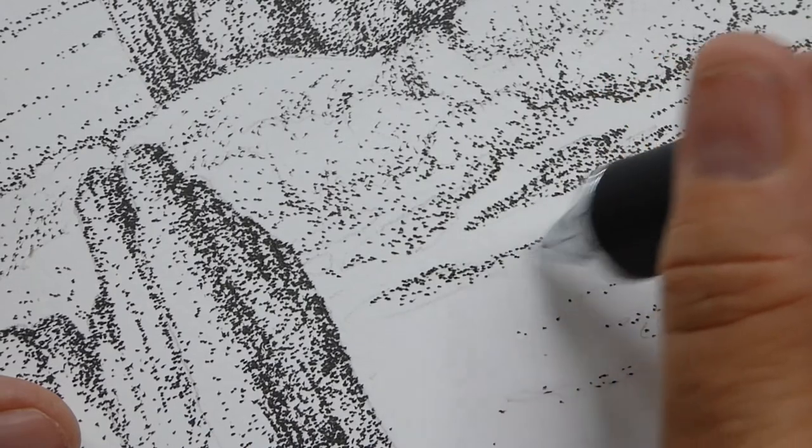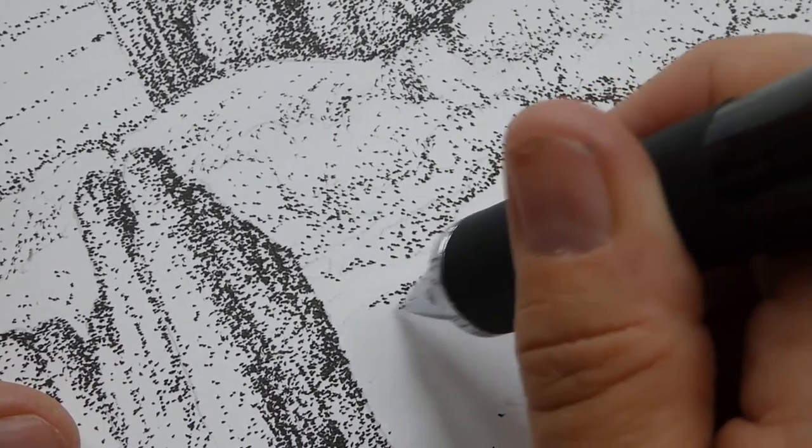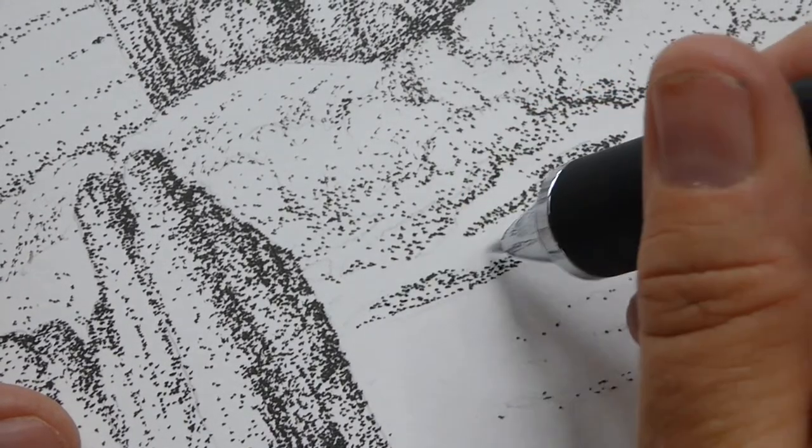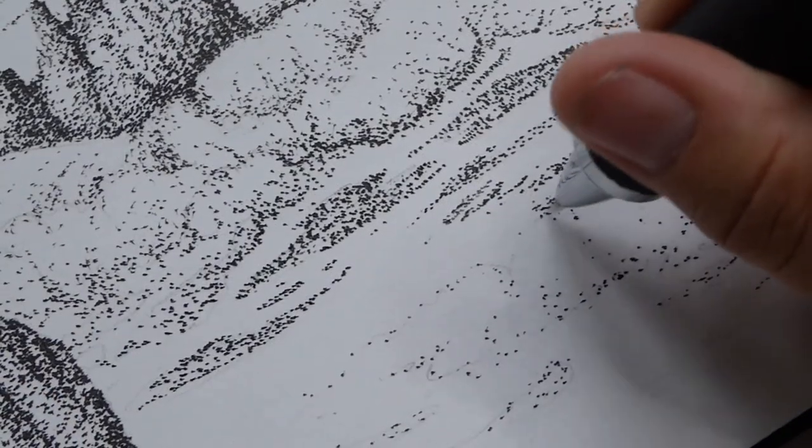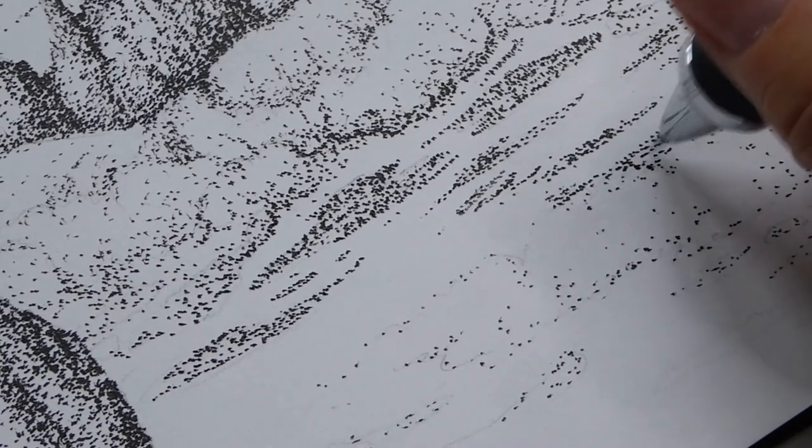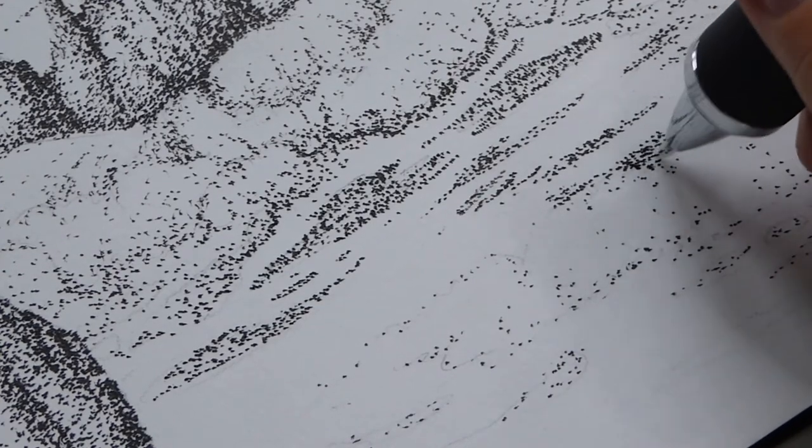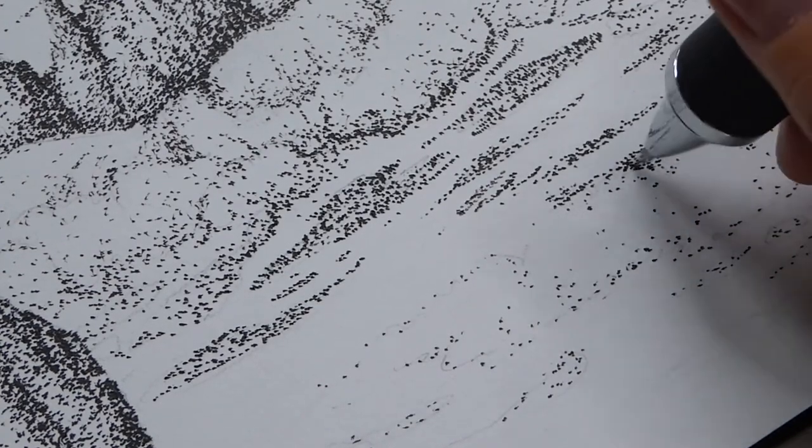Now earlier on I roughed in where I wanted these darker areas in the foreground to be and these are like the gaps in the foam. This is where all that sea foam is along the edge so I'm now coloring in the negative shape, the actual shape of the water that's showing through the little gaps.